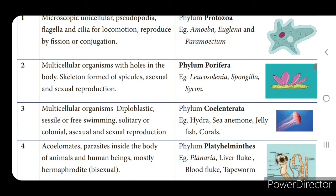Phylum Coelenterata — also multicellular organisms, diploblastic, sessile or free-swimming, solitary or colonial. Reproduction is by asexual or sexual reproduction.